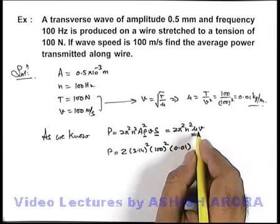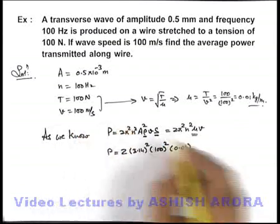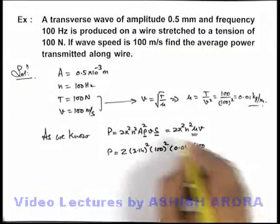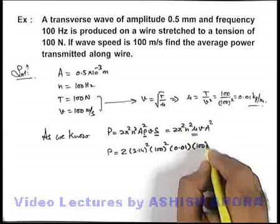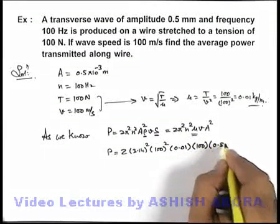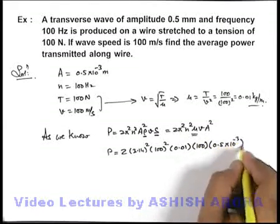And the wave speed, here we can use 100 m/s. There is amplitude squared also, so it'll be 0.5 × 10^-3 squared.